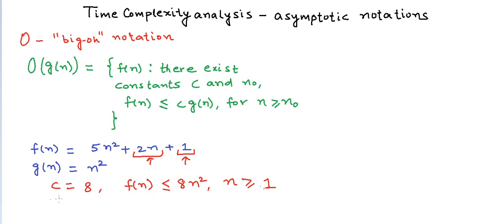So for c = 8 and n₀ = 1, we can say that f(n) is an element of the set Big O of n². We often also write this as f(n) = O(n²). Let us now plot these two functions on a graph.